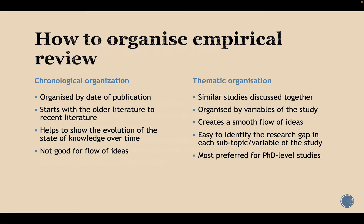There are various ways of organizing the empirical review. The first is chronological organization — organizing by date of publication, starting with older literature and moving to the most recent. This helps show the evolution of knowledge over time, but the disadvantage is that it's not good for flow of ideas since it focuses on when studies were published rather than how they are similar or different. The second way is thematic organization, grouping similar studies together and discussing them together — you can also organize by the variables of study, which helps create a smooth flow of ideas.